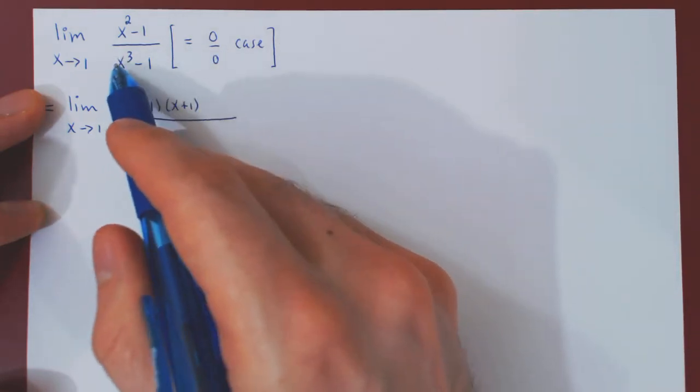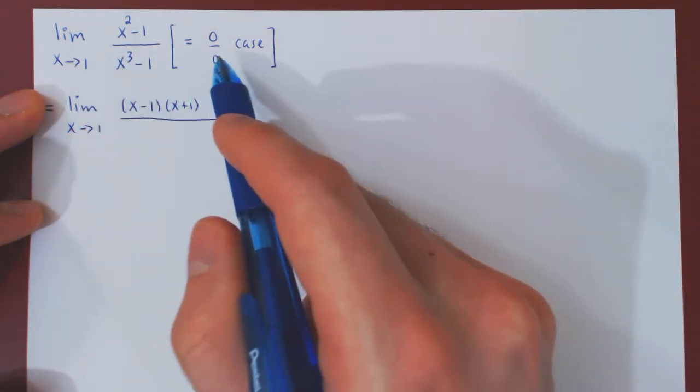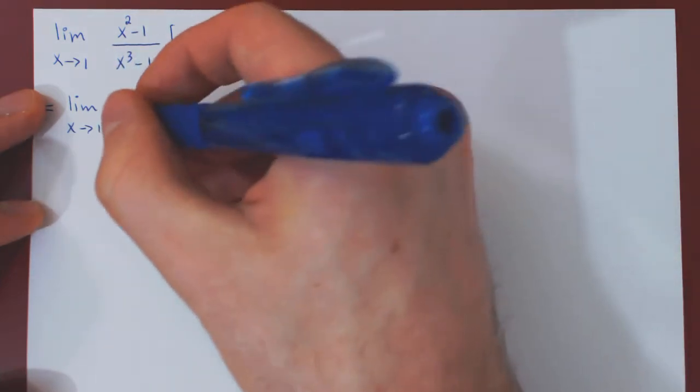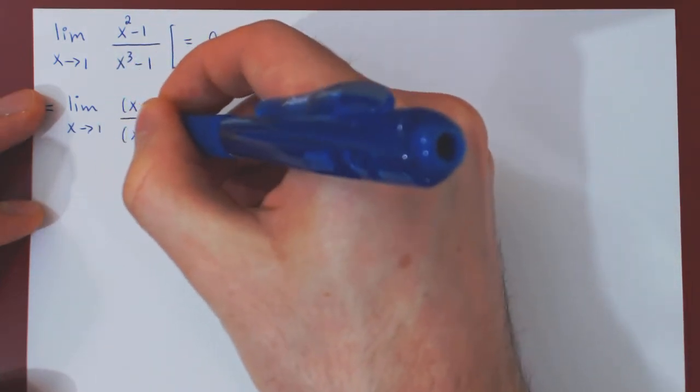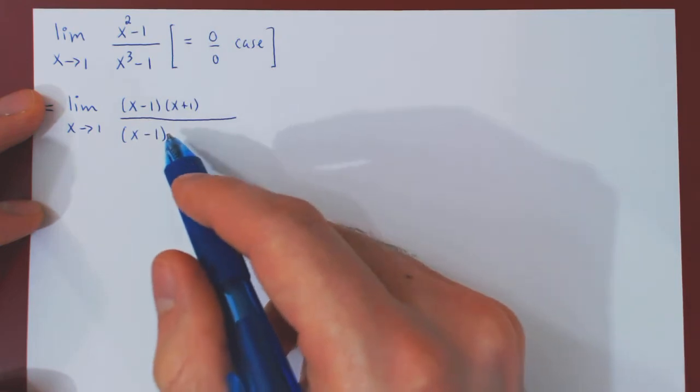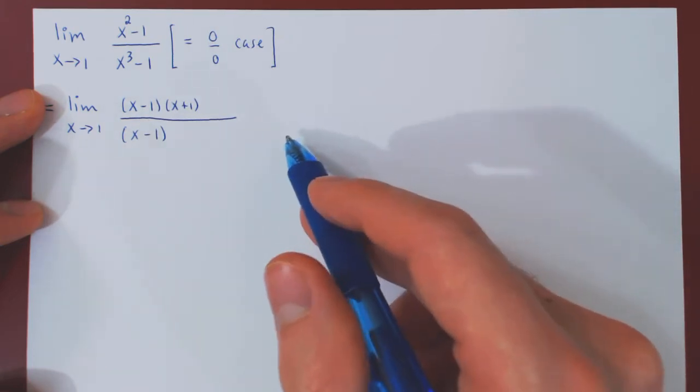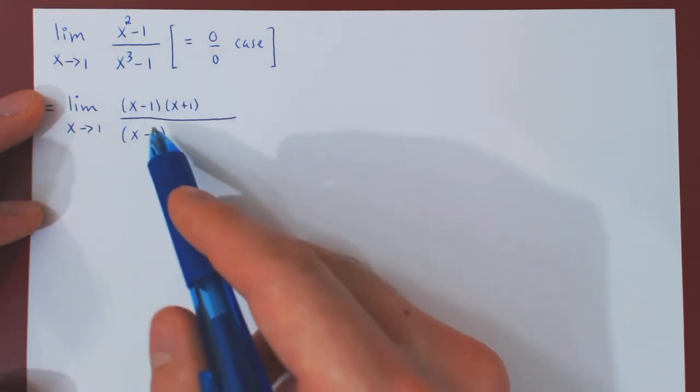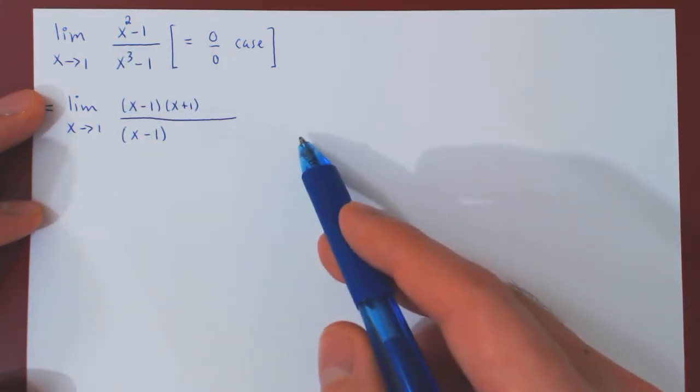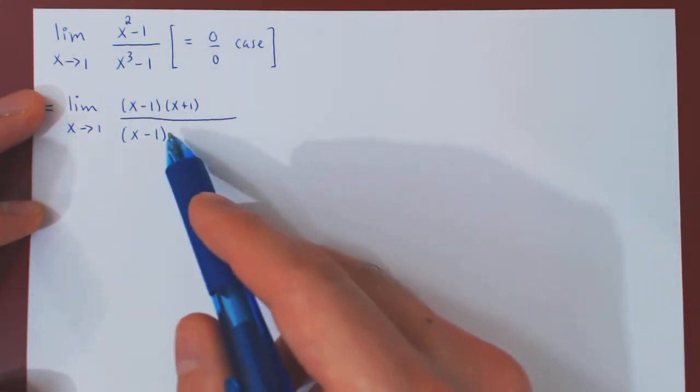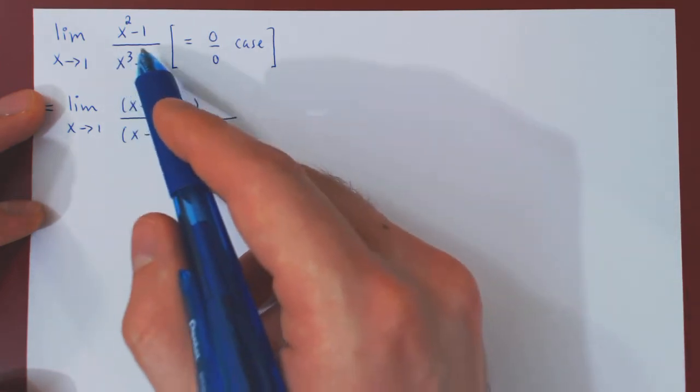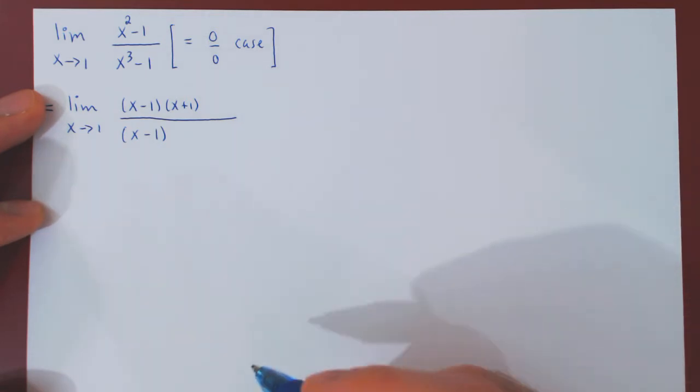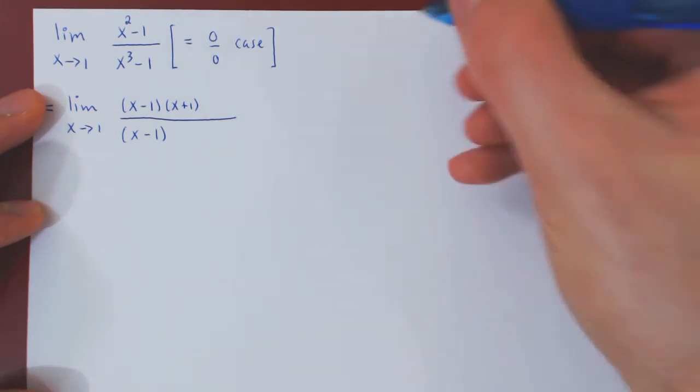And again, because x cubed minus 1 is 0 at x equals 1, x minus 1 is also a factor of x cubed minus 1. The question is, how do we find the missing factor? Well, if you think about this, x cubed minus 1 is x minus 1 times a quadratic polynomial, therefore the missing factor must quite simply be x cubed minus 1 over x minus 1. And so we can find the missing factor using long division.